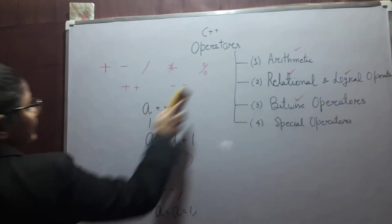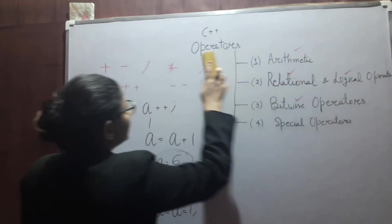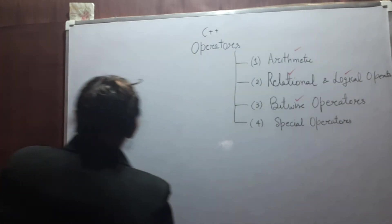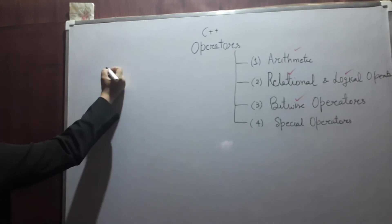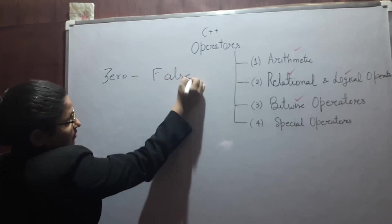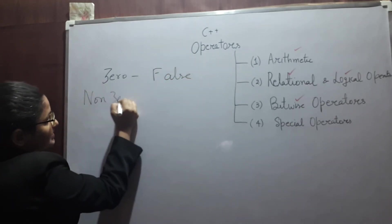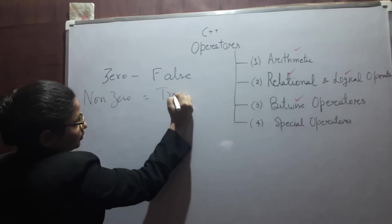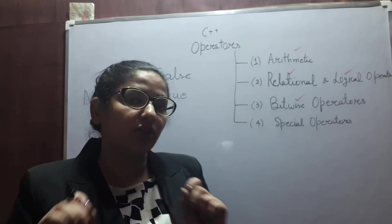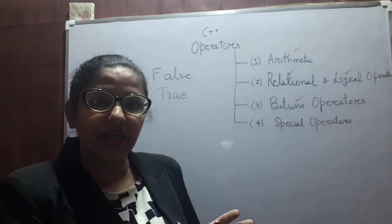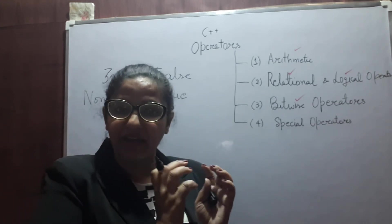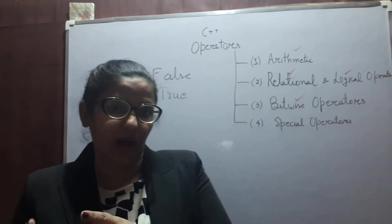Next are relational and logical operators. One important point: zero means false, and any non-zero value means true. Conversely, if you have false it is zero, and if you have true it is one.